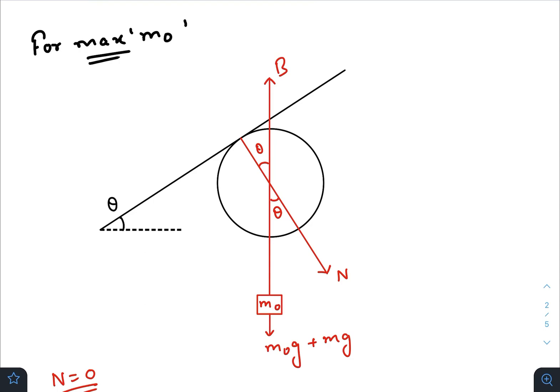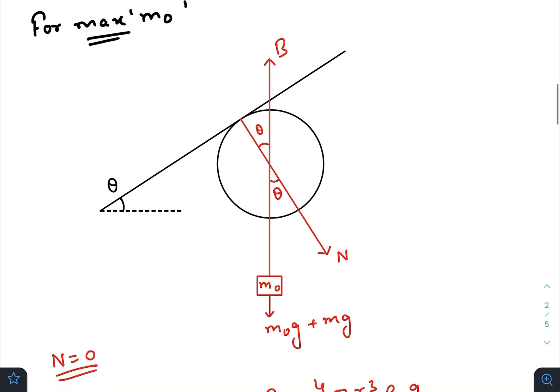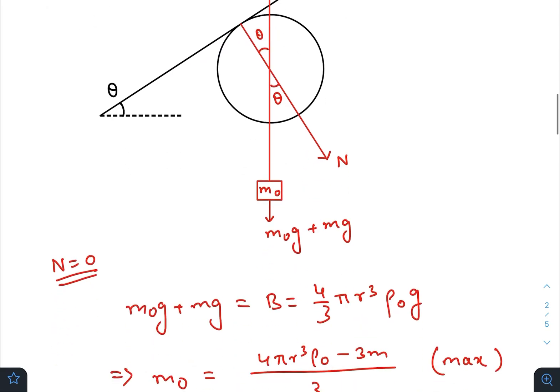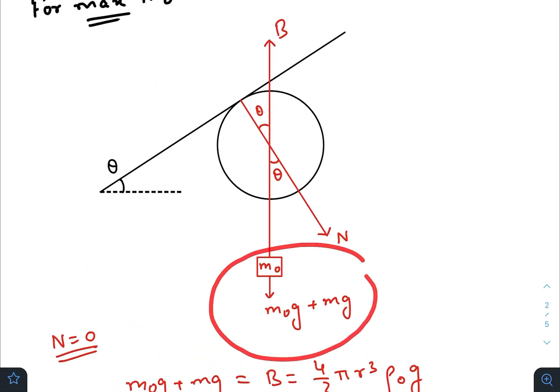So that below that value of m0, it should be the maximum value, right. As you can see the free body diagram, I am not drawn the friction here because we will put n equals to 0. So the downward force, that is the weight of m0 and weight of this whole balloon, will be balanced by the buoyancy force. And buoyancy force must be equal to volume of the balloon 4/3 pi r cubed times density of the surrounding air times g.